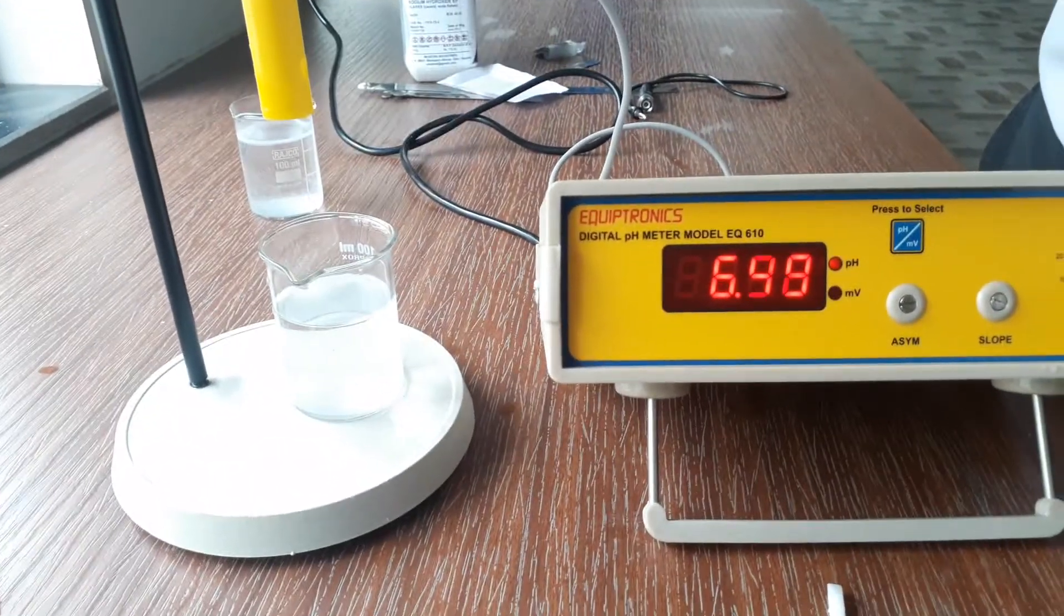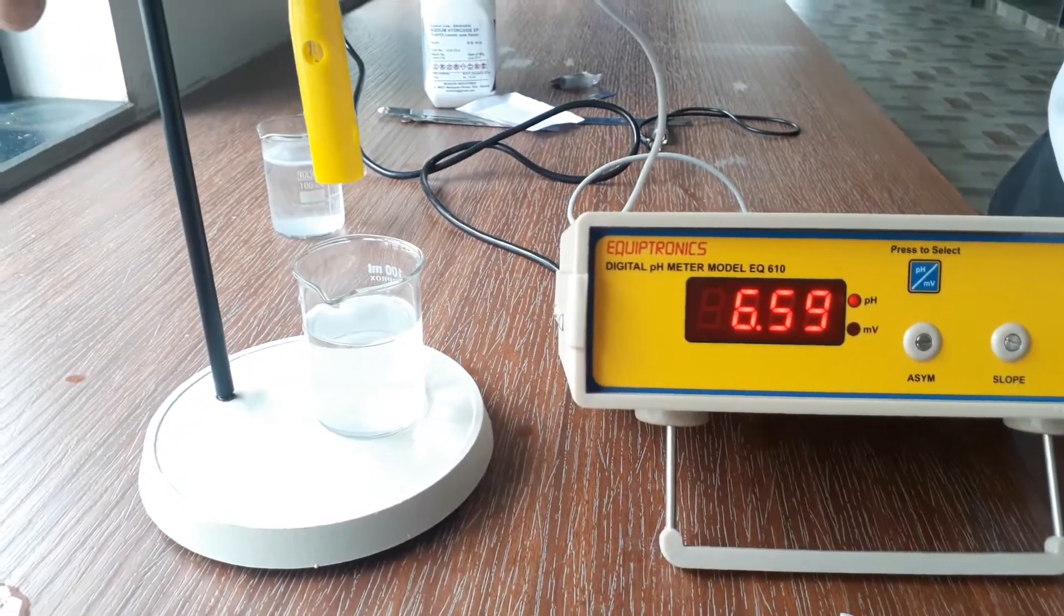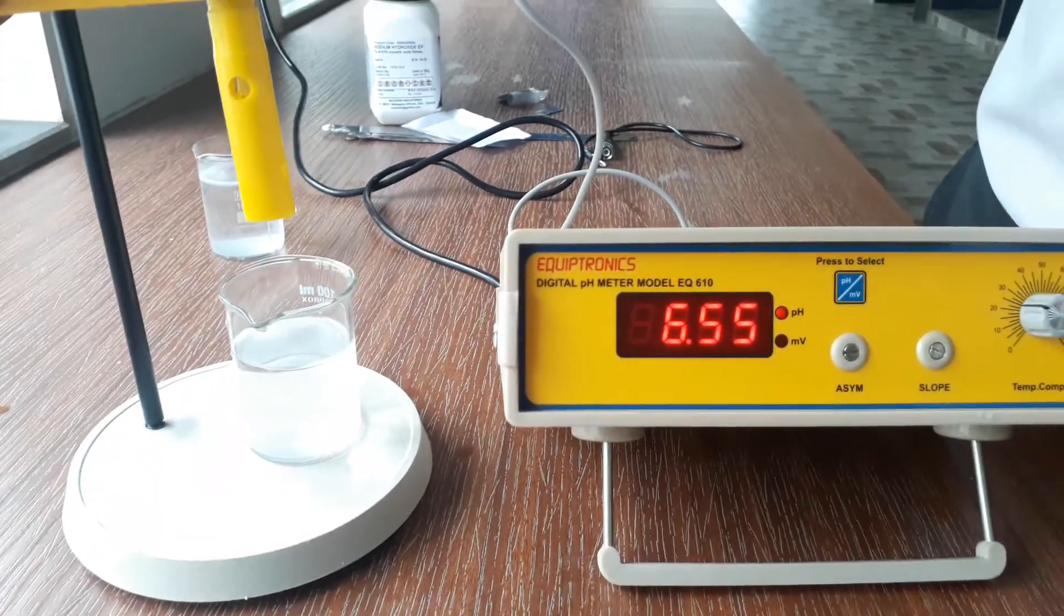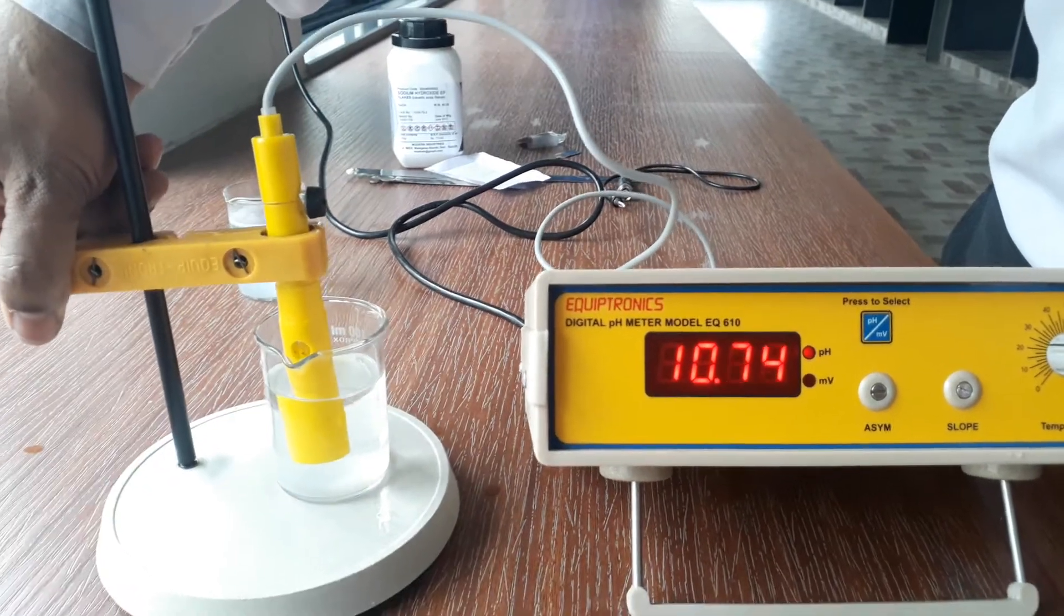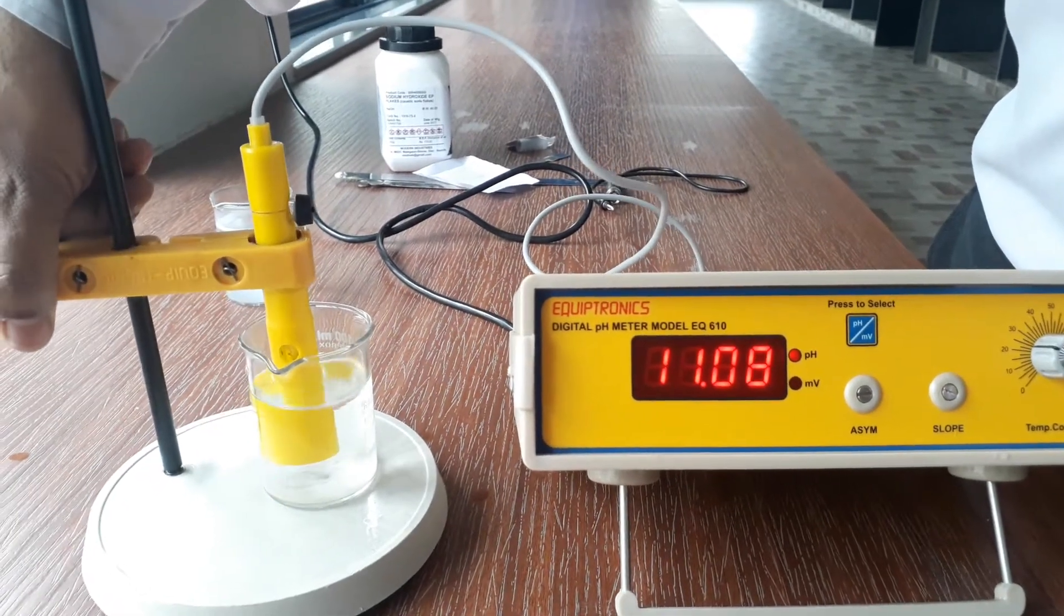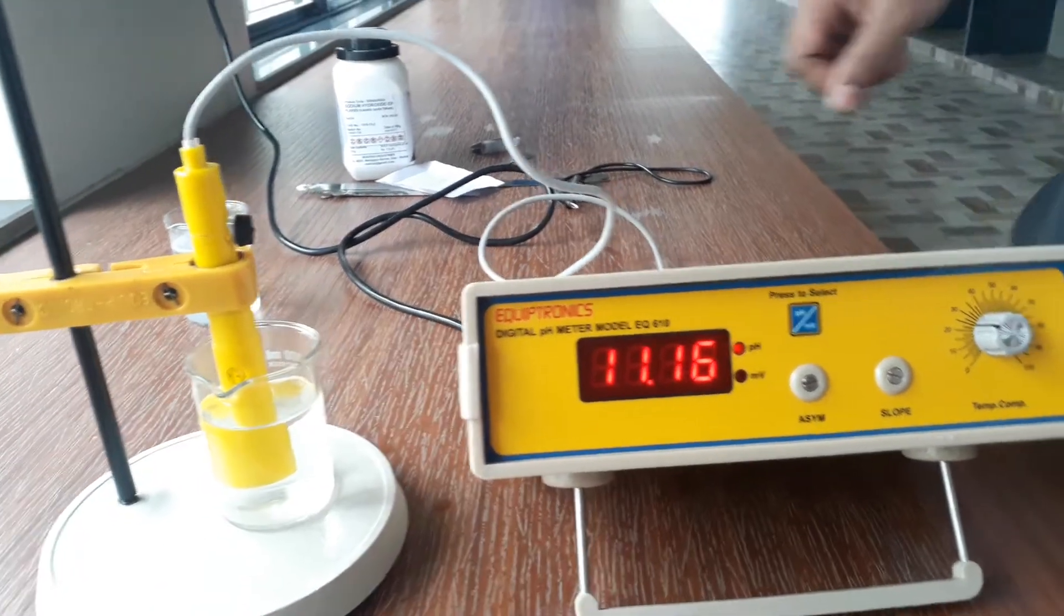If it was an unknown solution then we can determine the pH value or whether it is acidic or basic. But we know the solution already, that it is a base, so we can calculate its pH value. So see after dipping the electrode in the base, you can see immediately the value is changed.